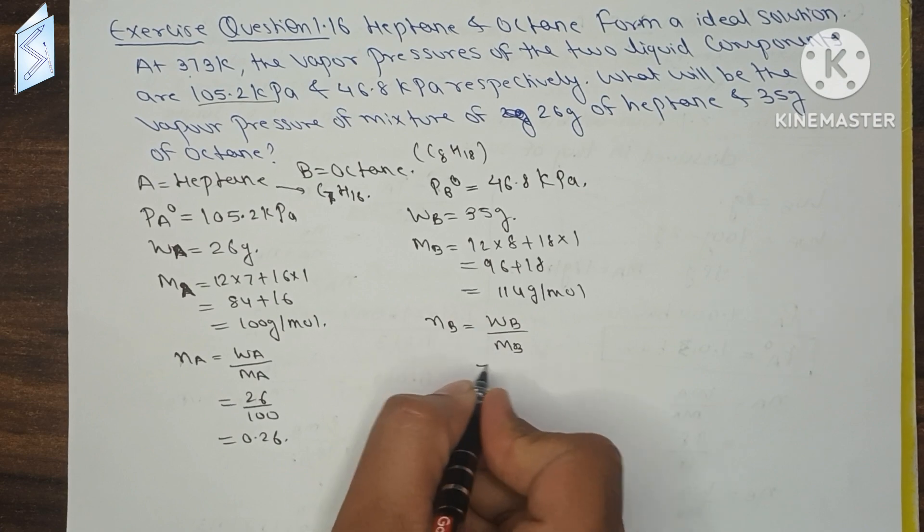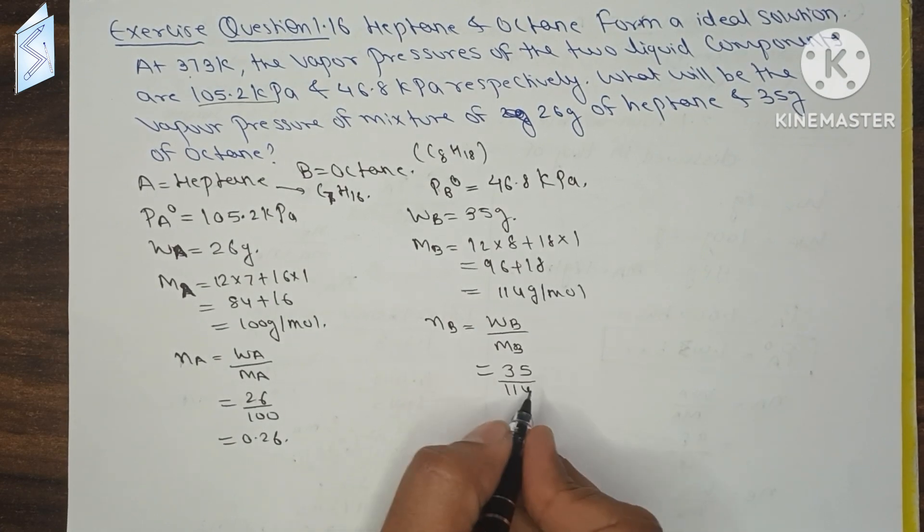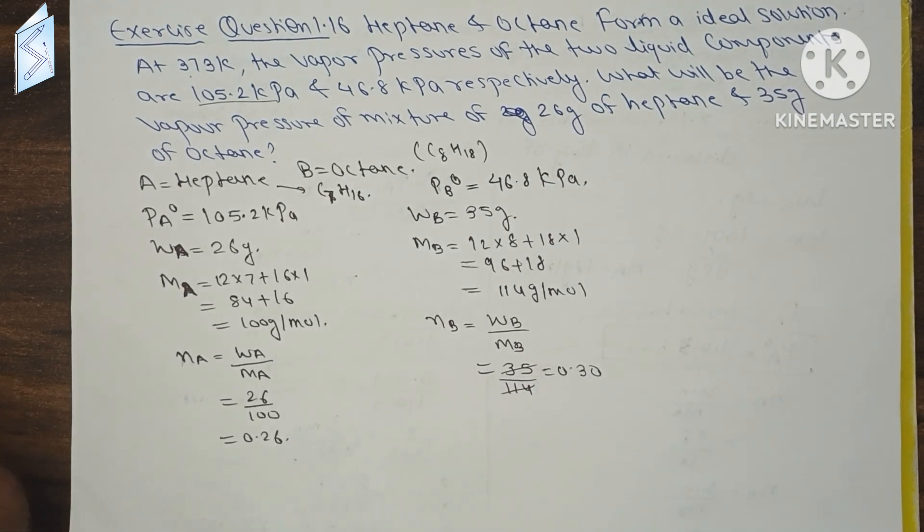Now NB will be WB by MB, which is 35 by 114. If we divide, this will be 0.30 mol.